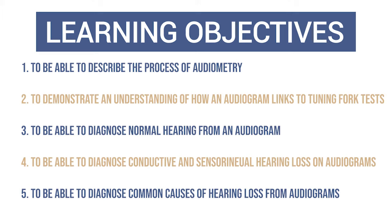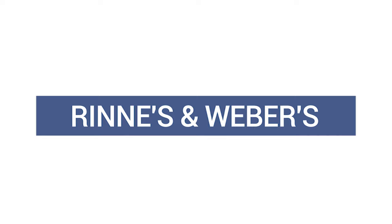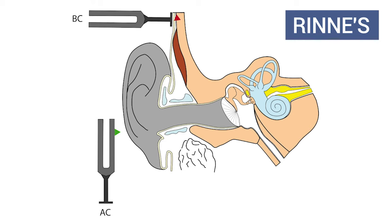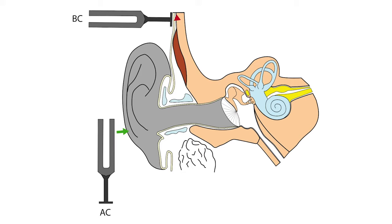Let's first quickly recap the bedside hearing assessments you will have practiced during the ENT examination starting with Rinne's test, which compares air conduction to bone conduction. Air conduction involves sound being funneled via the pinna into the ear canal where it passes through the tympanic membrane and ossicles.